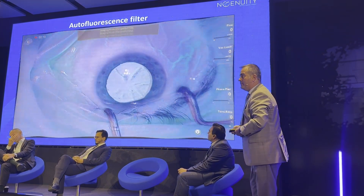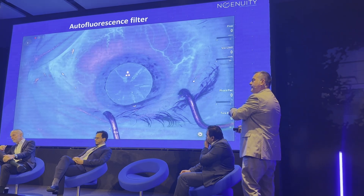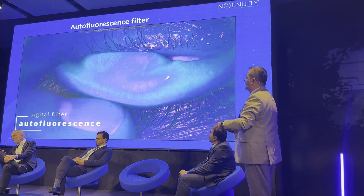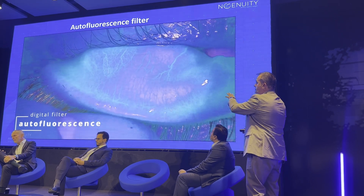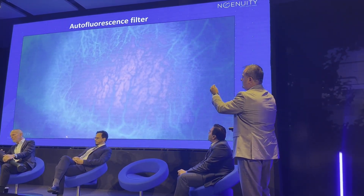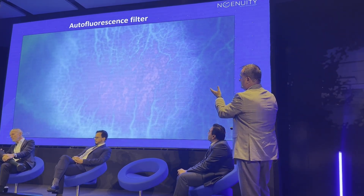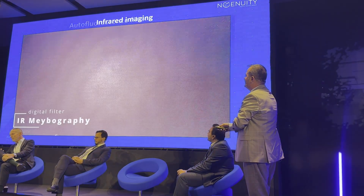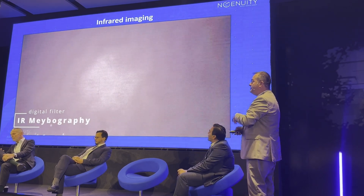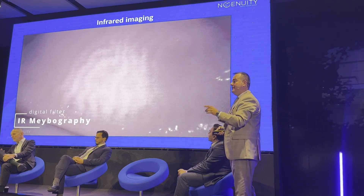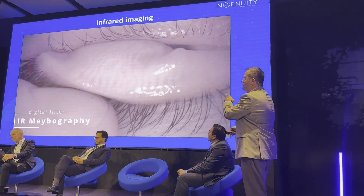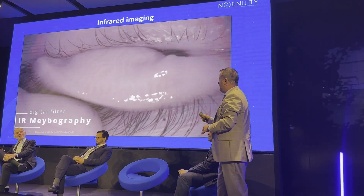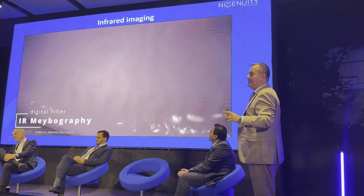We can have autofluorescence without any dye — playing with the color channel, we can see the scleral vessels, collector channels probably — just to show the resolution. This is the back of the eyelid, but it looks really spectacular. Autofluorescence. Infrared imaging — just to show that the Ingenuity camera is able to perceive infrared light, and you can do topography with the Ingenuity. This shows the enormous capabilities of the Ingenuity camera.